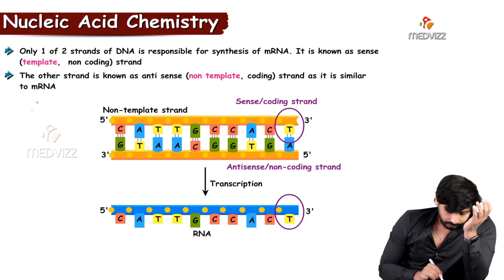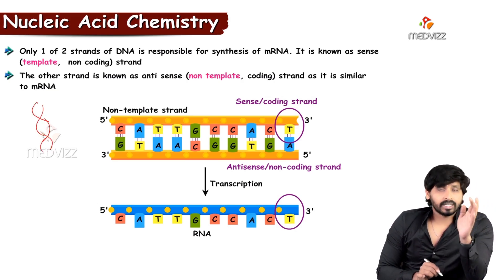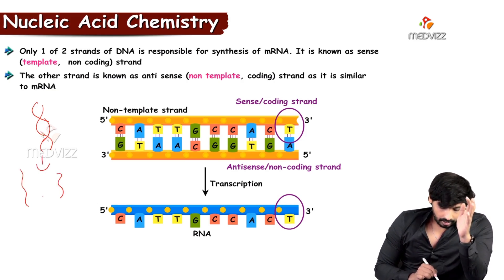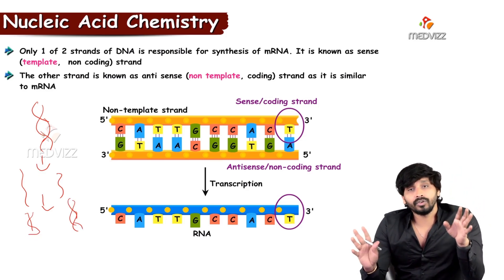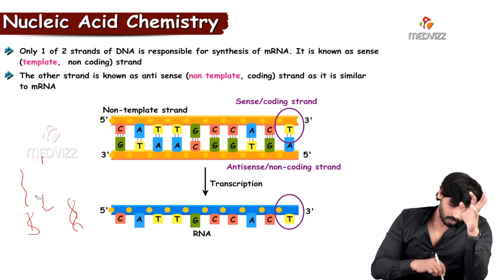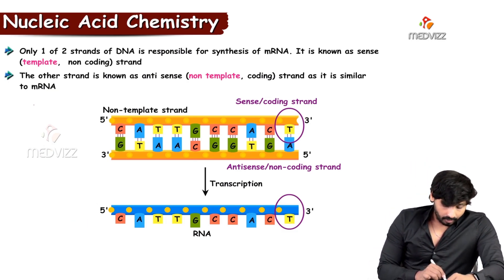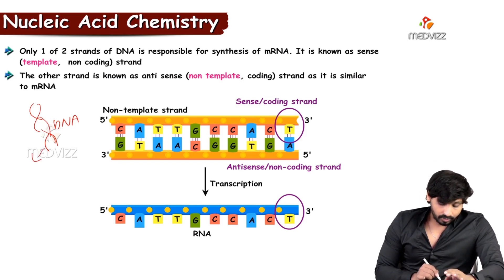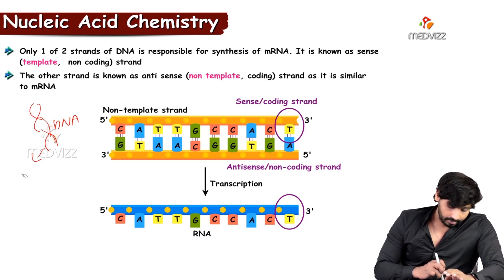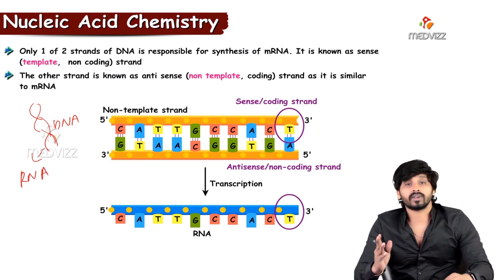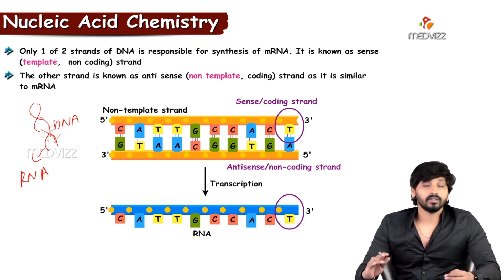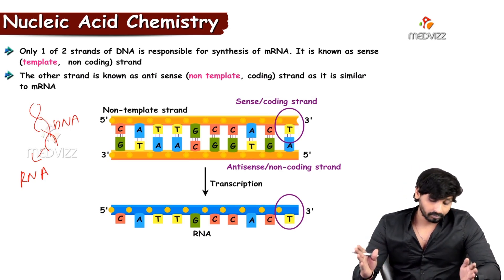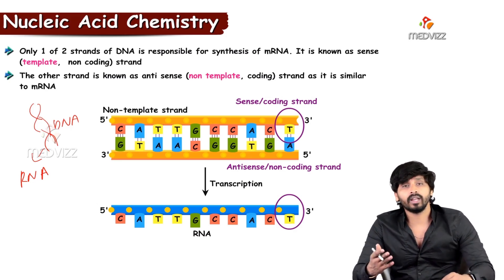For DNA synthesis, both strands are separated into two single strands, and each single strand forms a new double-stranded DNA molecule. But for protein synthesis, out of the two strands of DNA, only one strand is used to synthesize RNA — that is known as the coding strand. The other strand is known as the non-coding strand or non-template strand. The synthesis of RNA from DNA is known as transcription, and the formation of protein from RNA is known as translation.